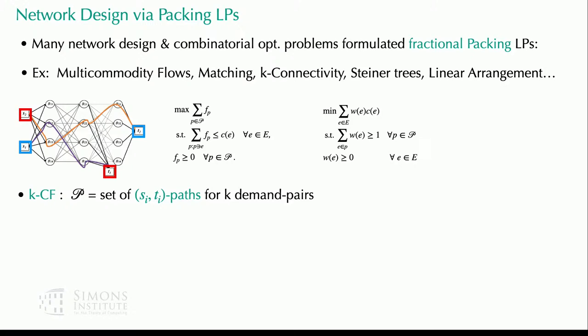The natural packing LP for this problem has a variable for every potential path between each legal demand pair — every legal red path, every legal blue path, and so forth. So we have an exponential constraint matrix and exponential number of variables. Each variable denotes the amount of flow routed through a specific path. Our goal is to route the maximum amount of flow respecting these edge capacities.